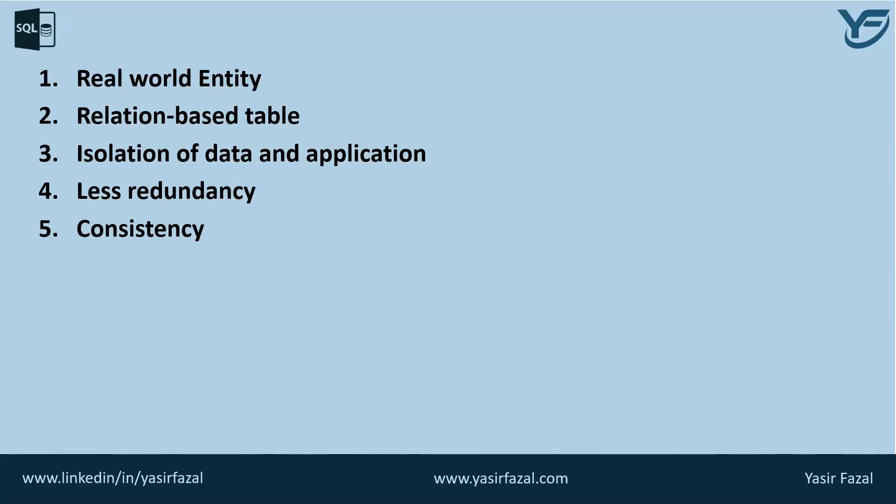The next characteristic is consistency. Consistency is basically a state where every relation in a database remains consistent. There exist methods and techniques which can detect any attempt to leave the database in an inconsistent state. DBMS can provide greater consistency compared to earlier forms of data storage applications like file processing systems.